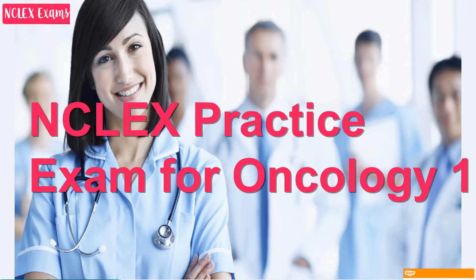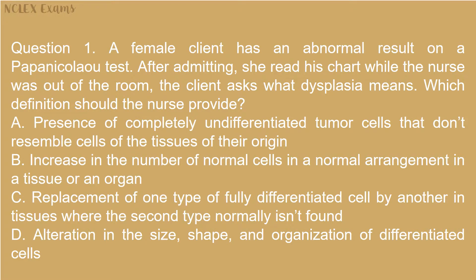NCLEX practice exam for oncology. Question 1: A female client has an abnormal result on a Pap smear test. After admitting she read the chart while the nurse was out of the room, the client asks what dysplasia means. Which definition should the nurse provide? A) Presence of completely undifferentiated tumor cells that don't resemble cells of the tissues of their origin. B) Increase in the number of normal cells in a normal arrangement in a tissue or organ. C) Replacement of one type of fully differentiated cell by another in tissues where the second type normally isn't found. D) Alteration in the size, shape, and organization of differentiated cells.